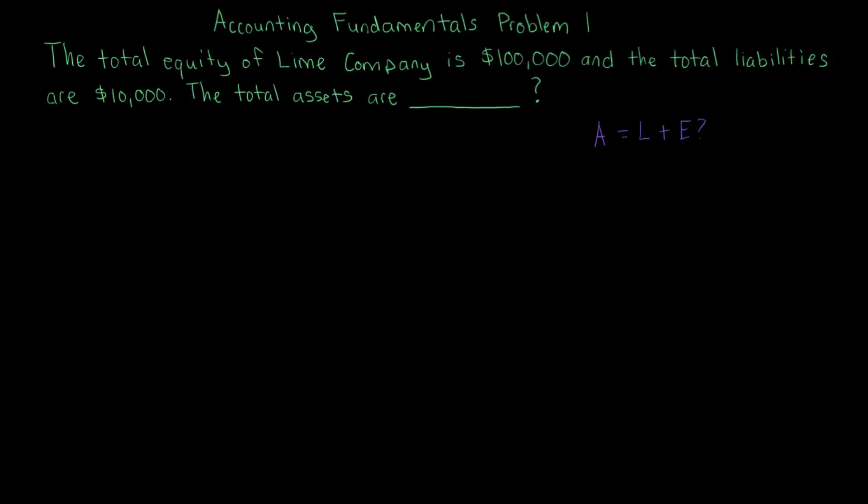So this question is just asking for assets. What are the total assets here given the amount of liabilities and total equity? Really the idea is that if we can plug in the liabilities, which we're told here is $10,000, and the equity of $100,000, then we can solve for assets.